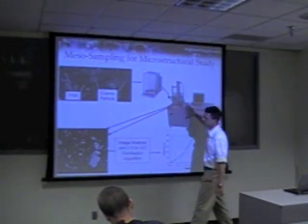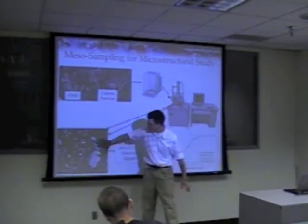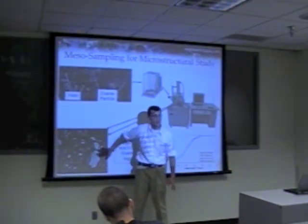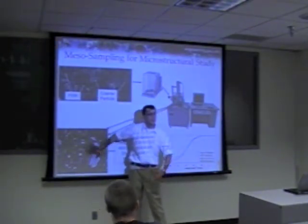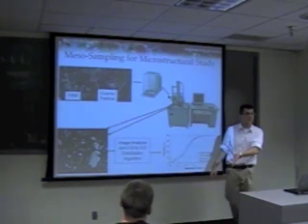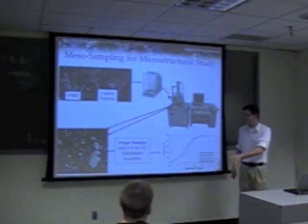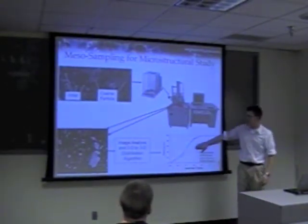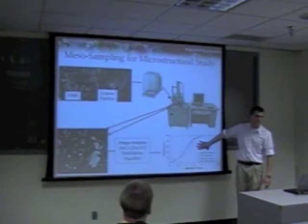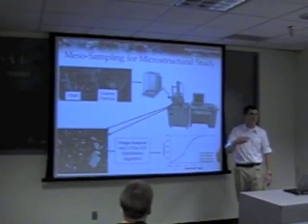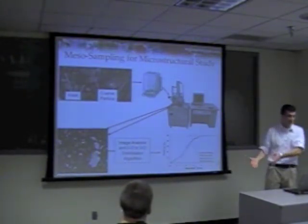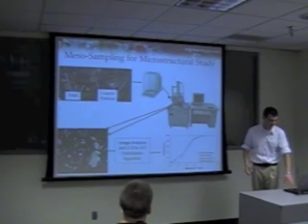We take these SEM images to get the particle size distribution of the sub-volume. Then, with the asphalt cement and the particle size distribution, we can get at factors like the volumetric concentration of mastic.